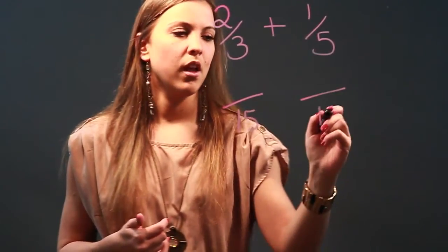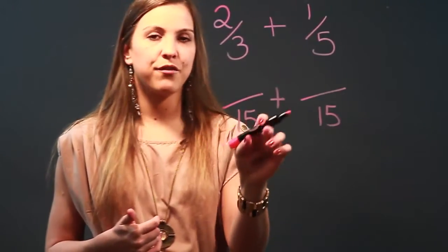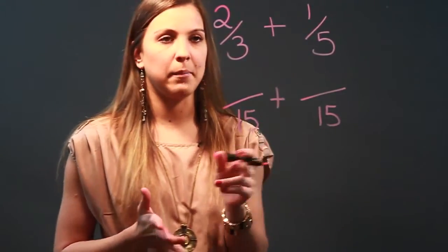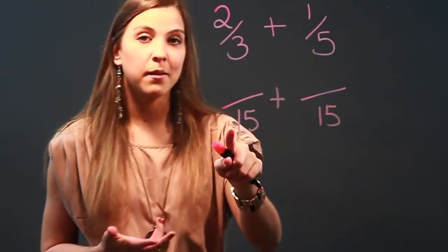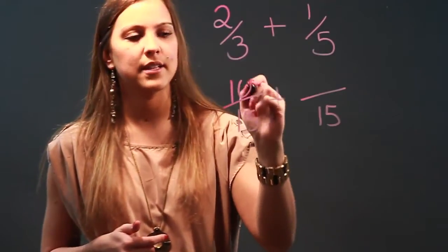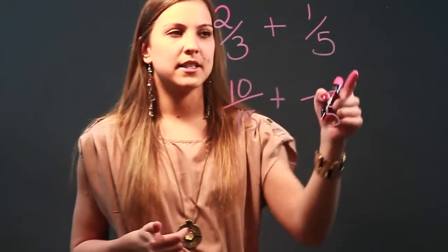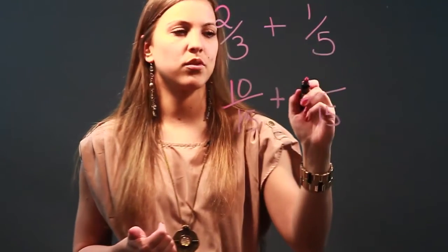Now I'm going to convert these fractions into fractions that have 15 as the denominator. I ask myself, how did I get from that 3 to 15? Well, I did times 5, so I'm going to have to do 2 times 5 to the top and I get 10. And then in this fraction, to get from 5 to 15, I did times 3, so I'm doing 1 times 3, which is 3.